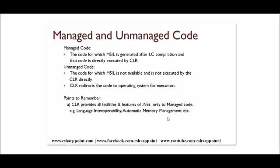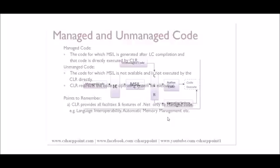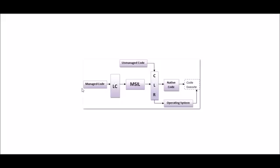Now, managed and unmanaged code. The 63 programming languages supported by .NET are managed code. For every source code there is a language compiler. When the language compiler compiles the code and generates MSIL, that code is managed code. If a language compiler compiles a source code and MSIL is generated, that is managed code. If for some source code MSIL is not generated — meaning the language compiler cannot generate MSIL — that source code is unmanaged code.